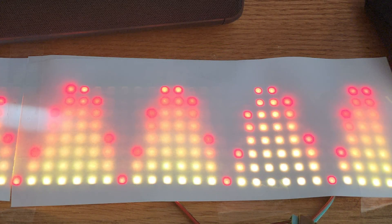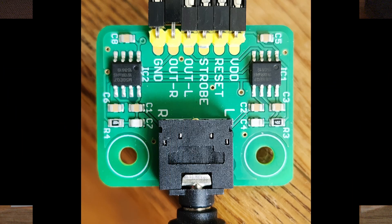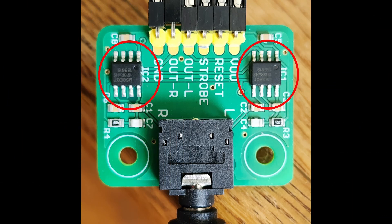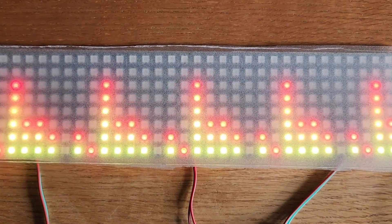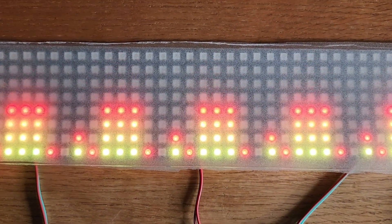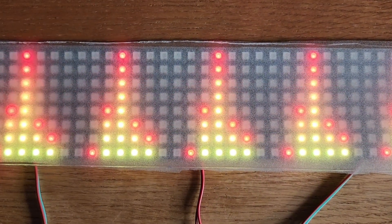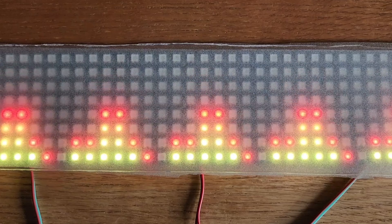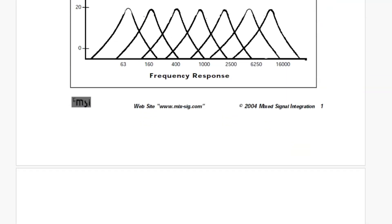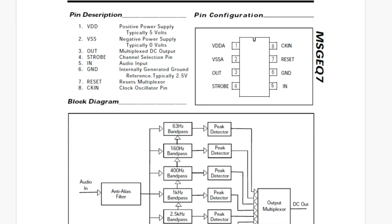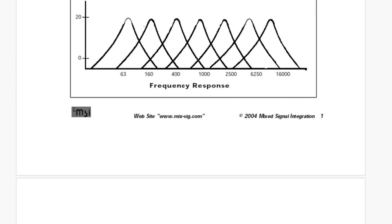This is the MSGEQ7 breakout board. The MSGEQ7 is a 7-band graphic equalizer IC, and here we have it integrated on a breakout board to simplify things. It basically separates an audio signal into 7 frequency bands, and the amplitude of each band is measured and output as a DC signal, making it a great option for audio visualization. The main component in our project is the MSGEQ7 IC, or integrated circuit.